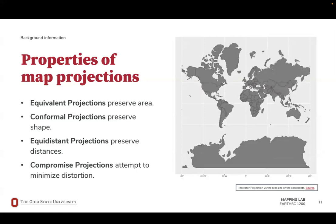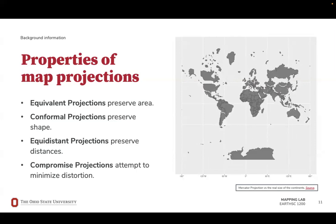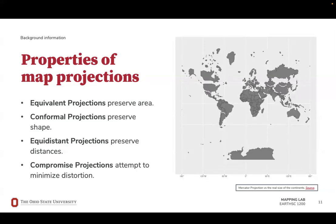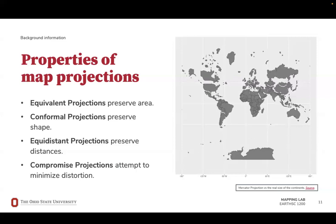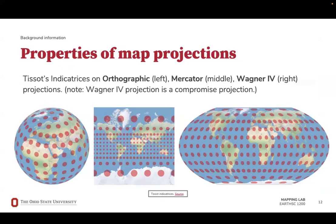There's also a fourth category of map projections which do not preserve any one property. Instead, they attempt to minimize the distortions in multiple properties at once, which can be for aesthetic purposes. In order to more readily observe distortions on a map, we can utilize what is called Tissot's Indicatrix, plural Indicatrices. If we drew a circle on actual Earth, then projected the same circle the same way that Earth's surface is being projected, we can then observe the distortion of that circle.